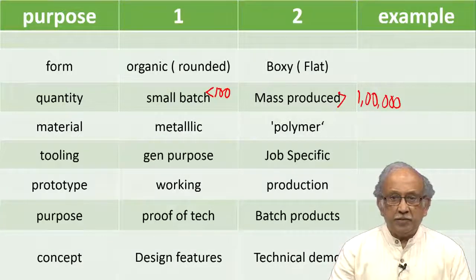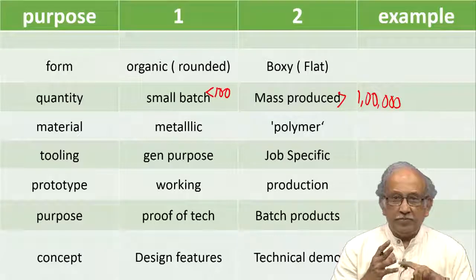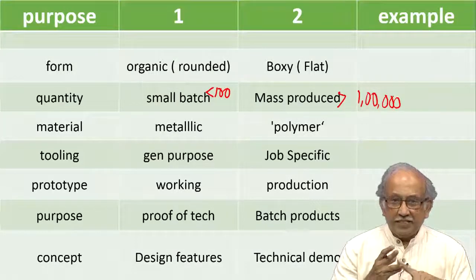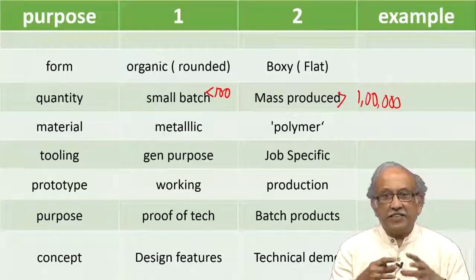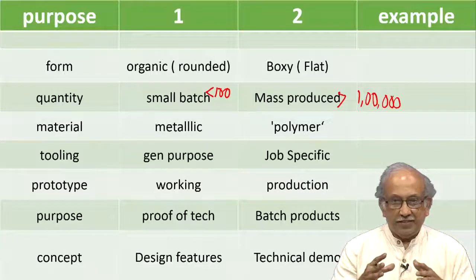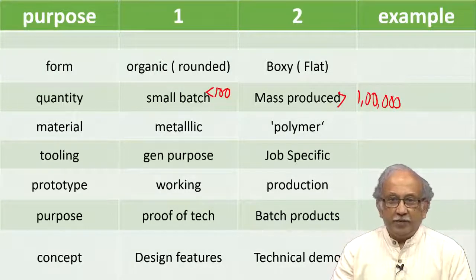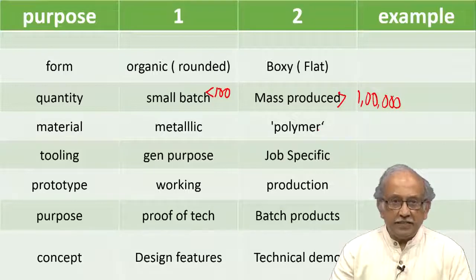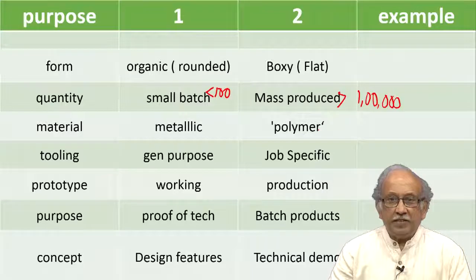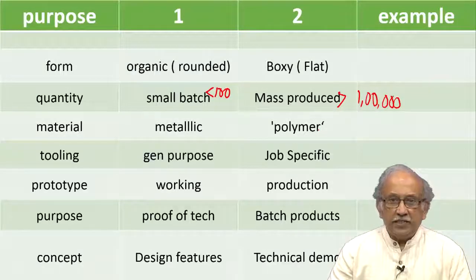Another important consideration is whether it should be made out of a metallic material — in the last lecture I talked about aluminum and mild steel — or do we go for what we loosely call plastic. The definition of plastic is something which does not have a sharp melting point. To avoid confusion, we now use the word polymer. Common materials are usually modified versions of ABS and polycarbonate, and a few other materials.